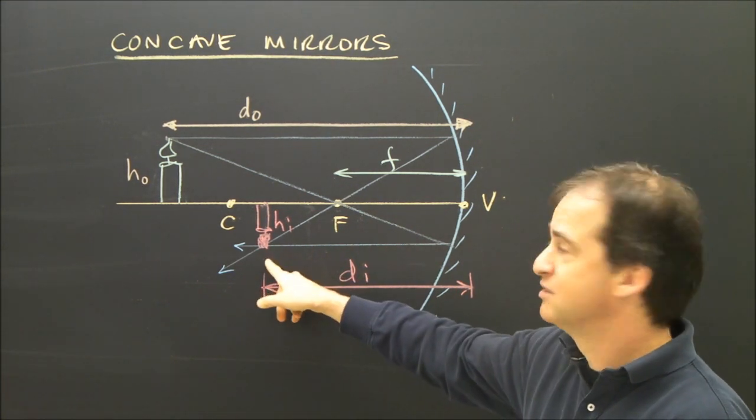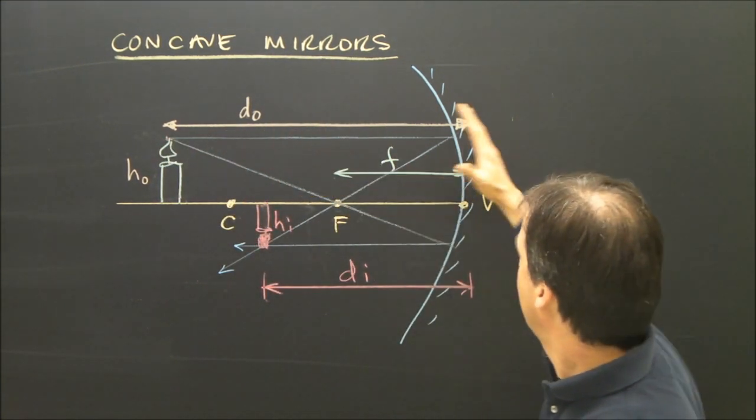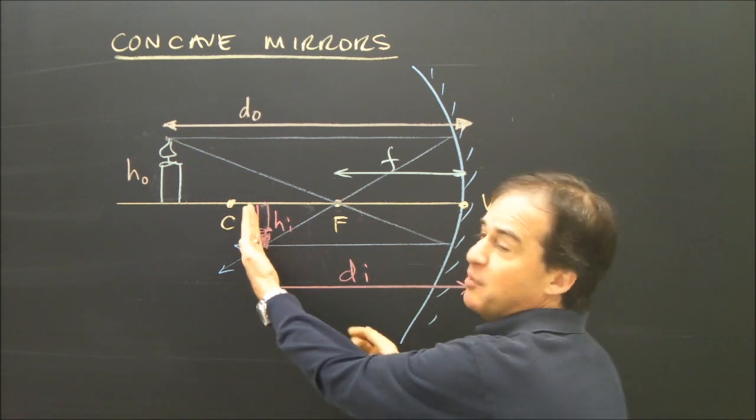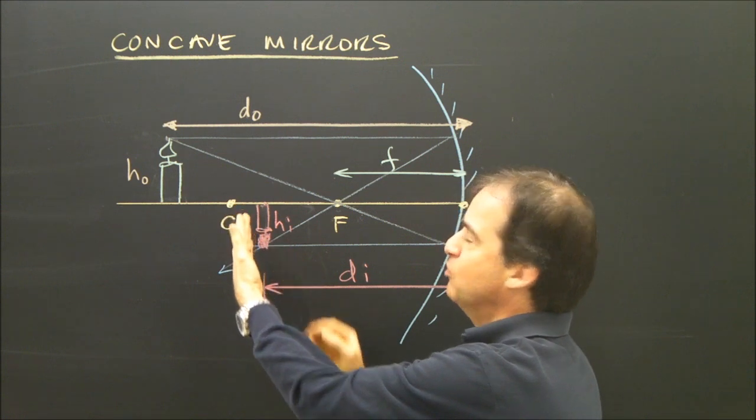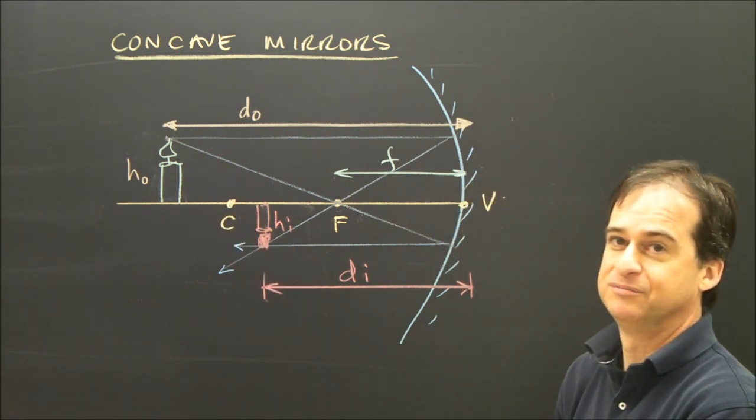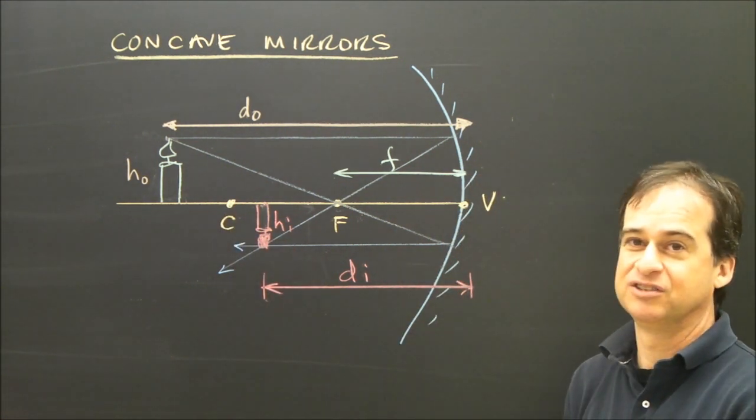A real image means if I had a real candle here and had a mirror here, I could put a piece of paper here, and it'll actually see, like reflected in there, an image onto my paper over here. So we'll go through a couple of calculations and you'll see that.